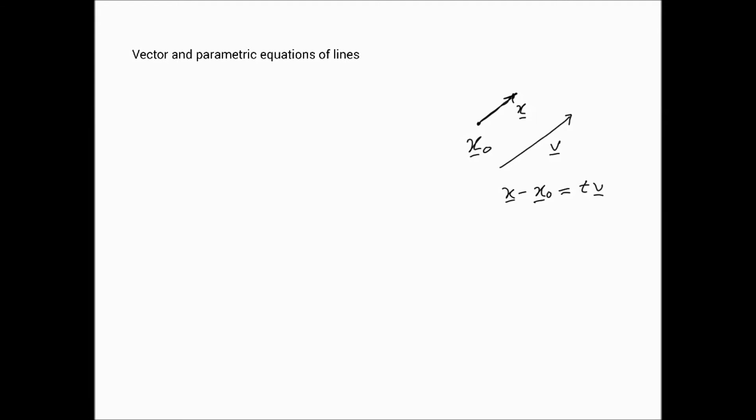x minus x0 should be parallel to some parameter t times v, which means that x is equal to x0 plus t times v, and that is the equation of a line in R2.